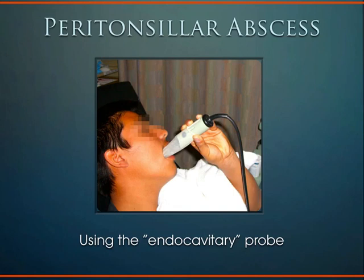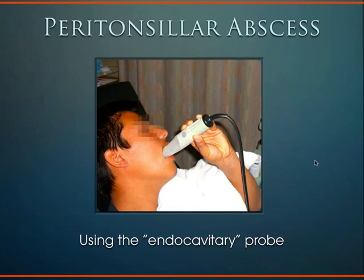Another place you can get abscesses in the head and neck area is near the tonsil. When you have an abscess adjacent to the tonsil, we call that a peritonsillar abscess. On physical exam, you open the patient's mouth, look in the back of the throat, and sometimes see a deviated uvula — though sometimes you do not. To avoid unnecessary radiation from CT scans, many times you can use ultrasound with the endocavitary probe. Here we're using the endocavitary probe on this 12-year-old male — being careful not to call it the endovaginal transducer, because they will rightfully spit the probe out.